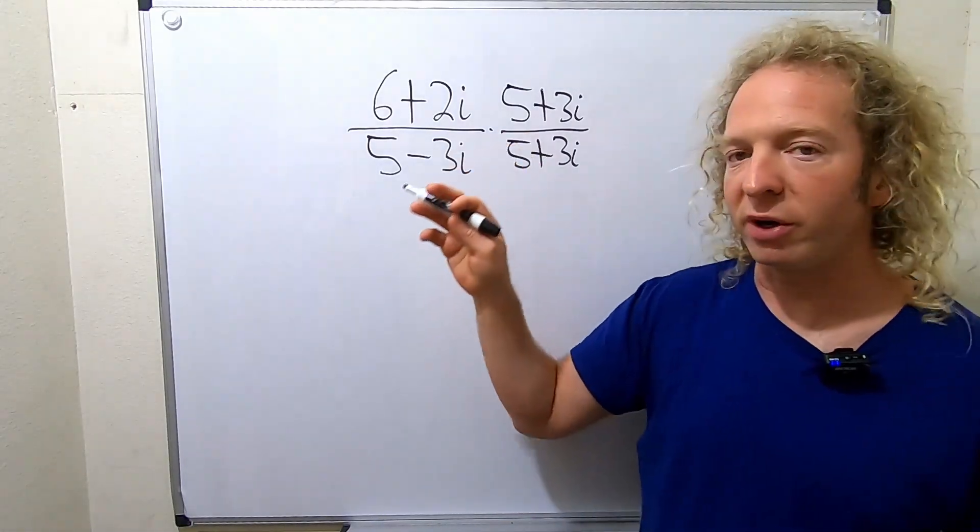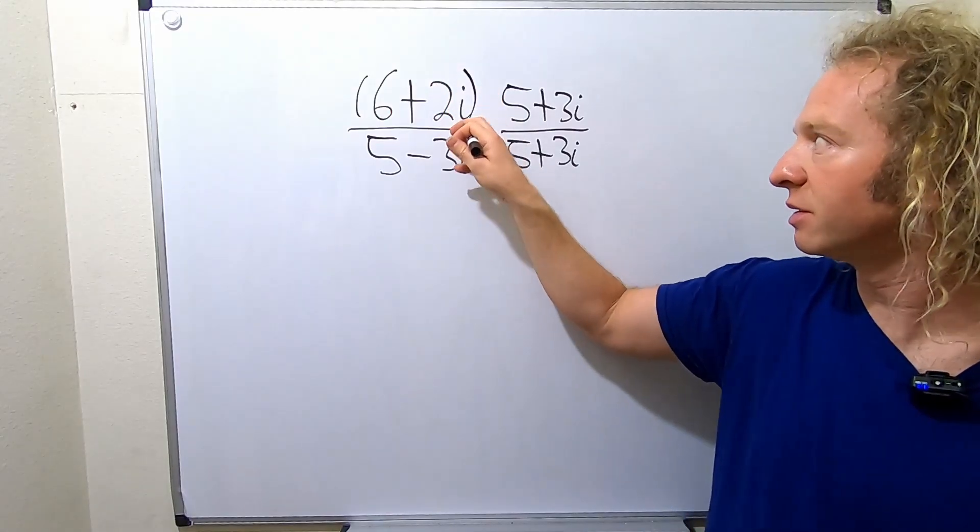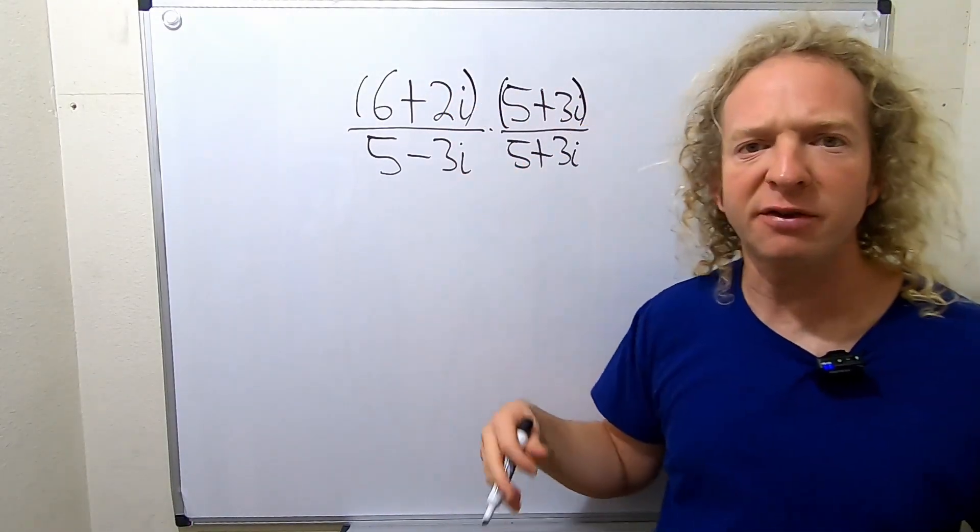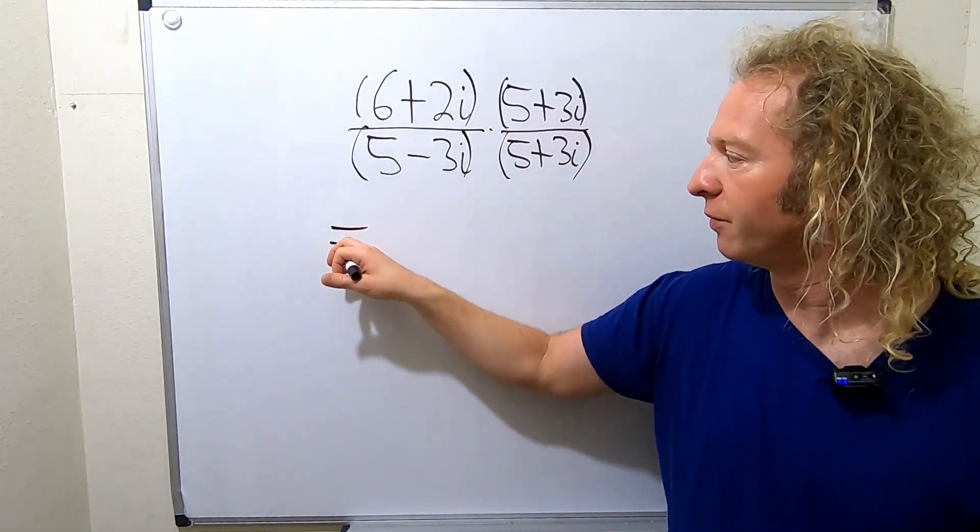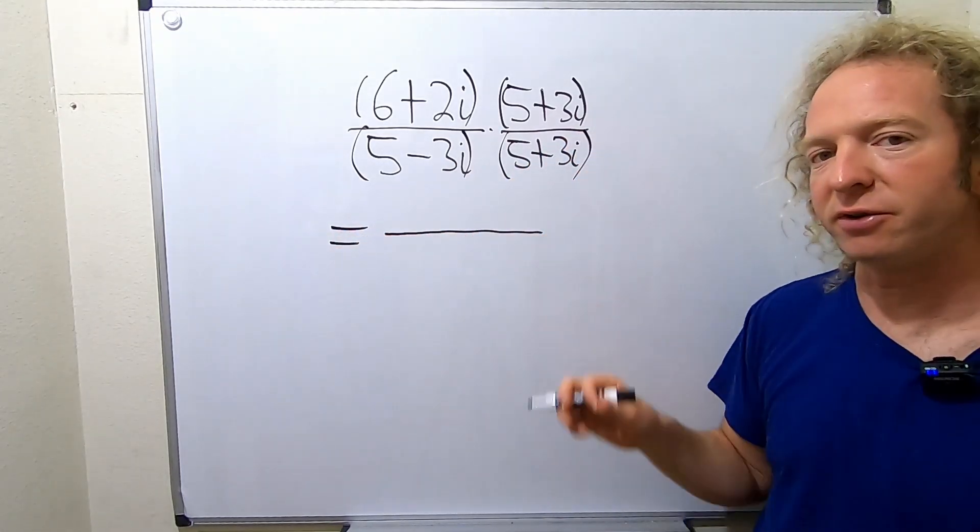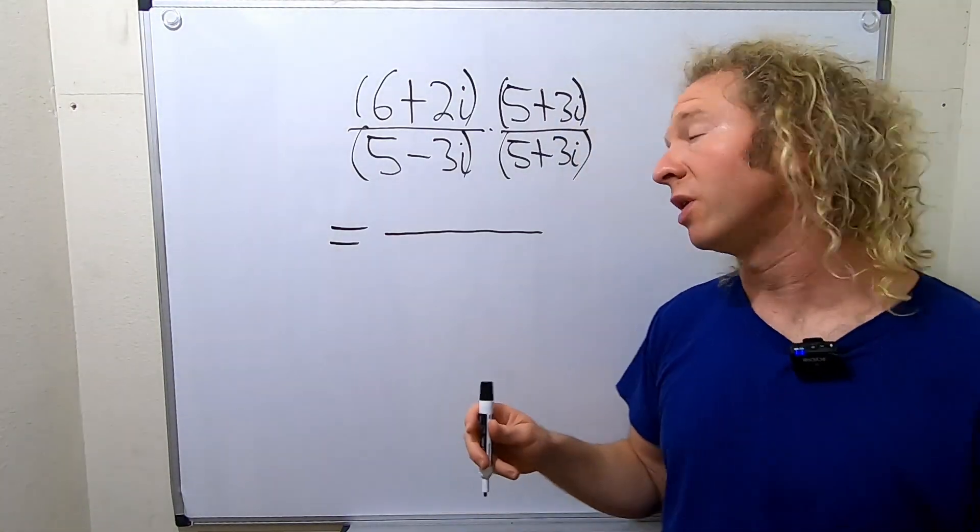So now in the numerator, I'm going to go ahead and put parentheses like this. And same thing in the denominator, just to make it a little more clear for the next step. So this is equal to, let's do the top part first. In the numerator, you want to just distribute.